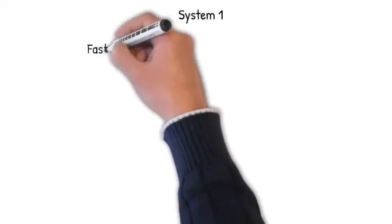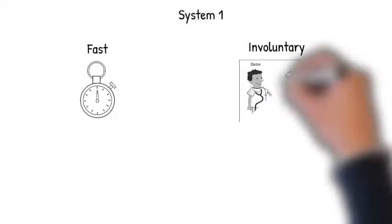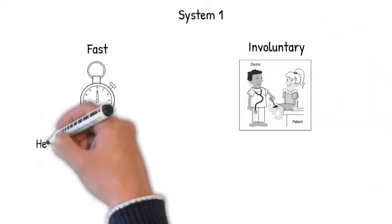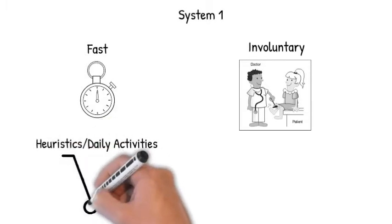System 1 is thinking fast. When thinking fast, one tends to rely on intuition and previous experiences. This type of thinking is usually involuntary. Daniel Kahneman uses the term heuristics to describe thinking methods that rely on fast thinking.